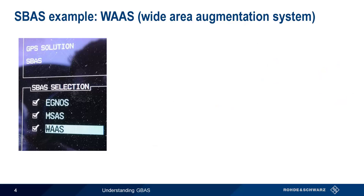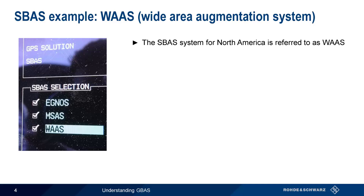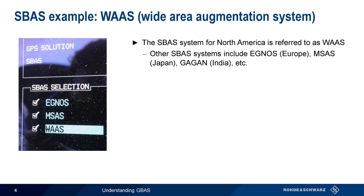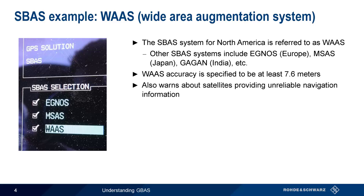Let's look at a specific example of SBAS. The SBAS for North America is referred to as WAAS, or the Wide Area Augmentation System. An SBAS typically provides corrections over continent or country-sized areas, so there are different SBASes for different parts of the world — for example, EGNOS in Europe, MSAS in Japan, GAGAN in India, etc. In the case of WAAS, the accuracy provided is specified to be 7.6 meters. In addition to providing improved position accuracy, WAAS can also provide warnings about satellites with unreliable navigation information, improving reliability as well as accuracy.